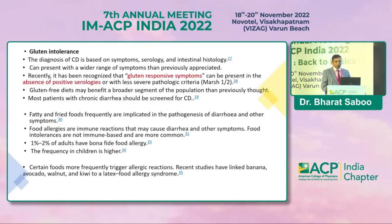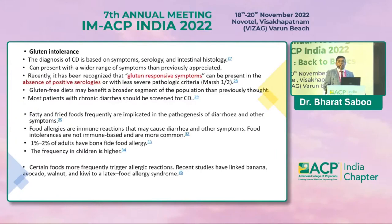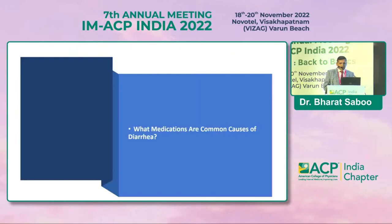Gluten intolerance should be mentioned as a common cause. The diagnosis of celiac disease is based on symptoms, serology, and intestinal histology. There are gluten-responsive symptoms present even when serology is negative. Patients with chronic diarrhea should be screened for celiac disease if possible. Fatty and fried foods are implicated in diarrhea pathogenesis. Food allergy is rare in adults, affecting approximately one to two percent.